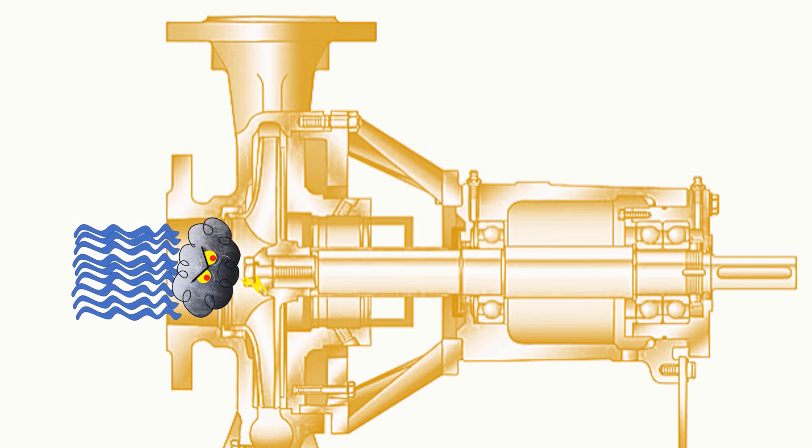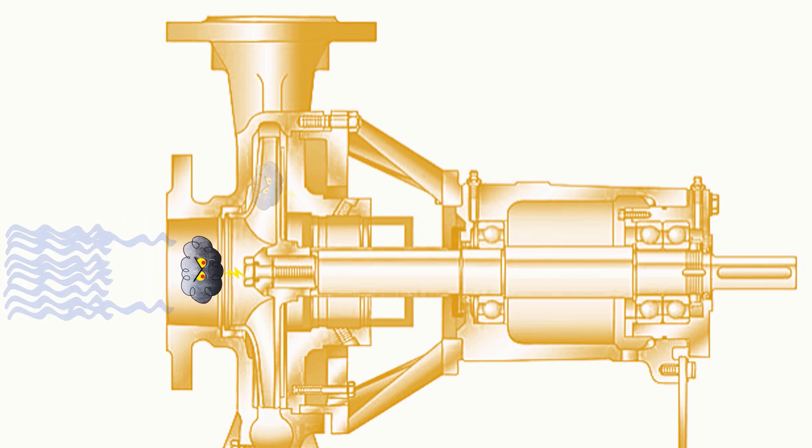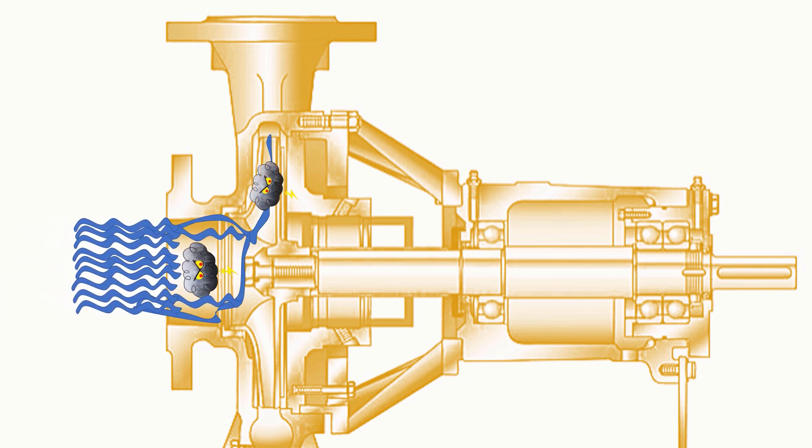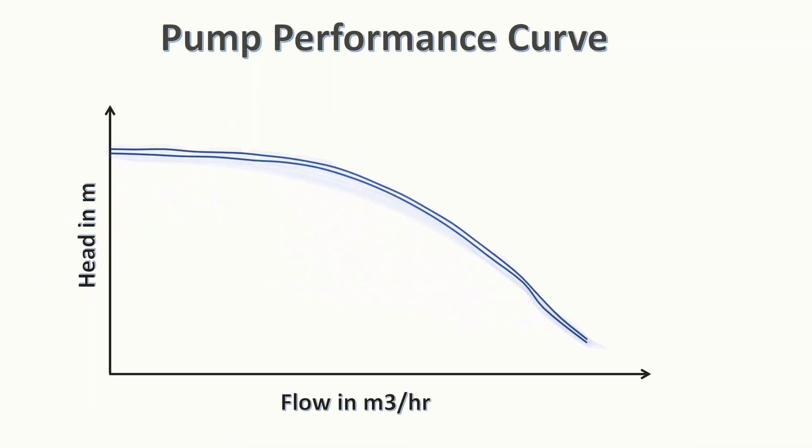Then eventually the air or gas volume increases so much that vanes push them to the discharge area but at the cost of liquid entering into the impeller. This leads to a dip in the volumetric flow rate.